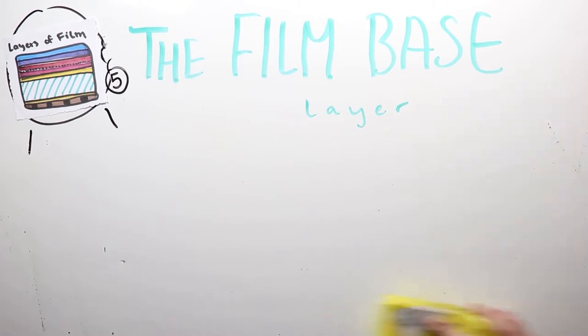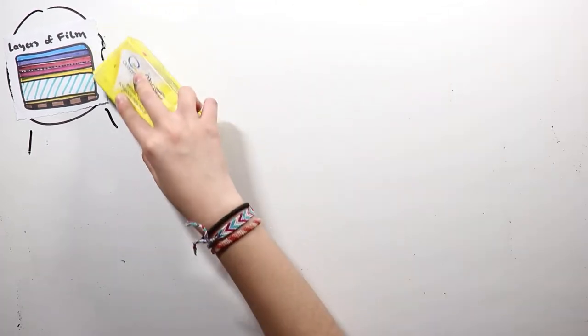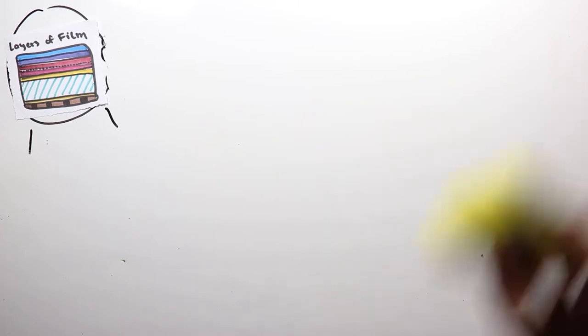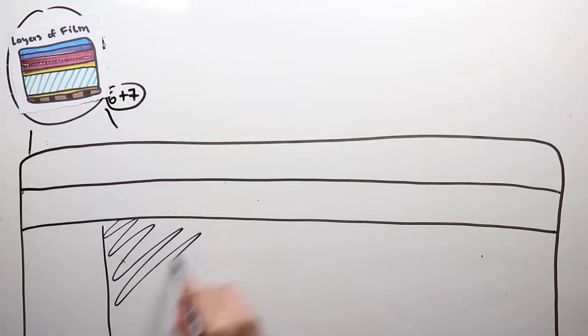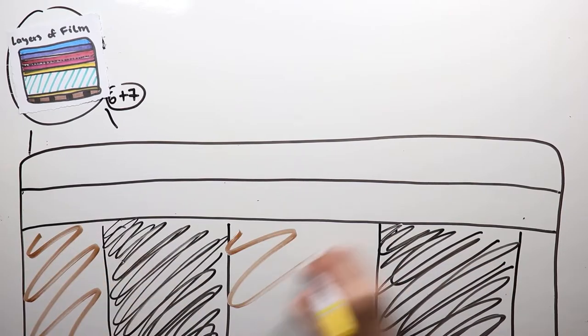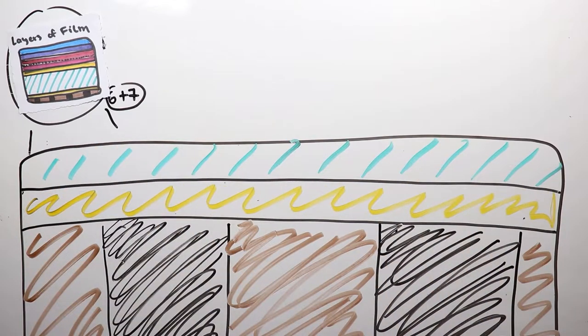Because of its high strength, chemical stability, toughness, tear resistance, flexibility, and dimensional stability, the greater strength of polyester base creates thinner films that require less storage room.